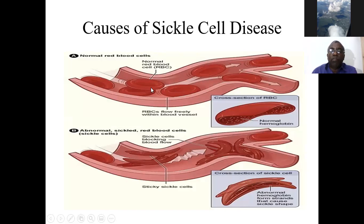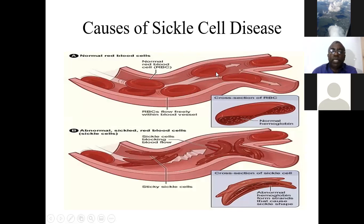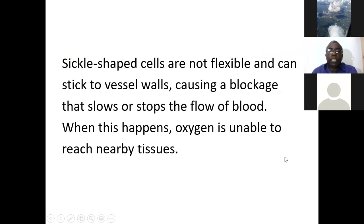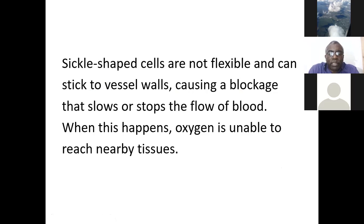This depiction shows red blood cells in an open blood vessel — normal round red blood cells versus cells where most have the sickle shape and are not rounded. Sickle-shaped cells are not flexible and can stick to vessel walls, causing a blockage that slows or stops the flow of blood. If blood carrying oxygen is stopped, oxygen to that part of the body will be lessened, and when any part of the body doesn't get oxygen, it will die.